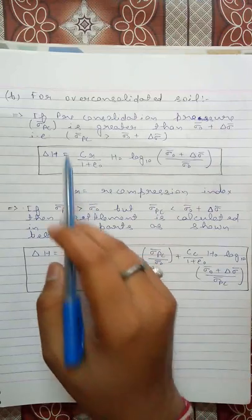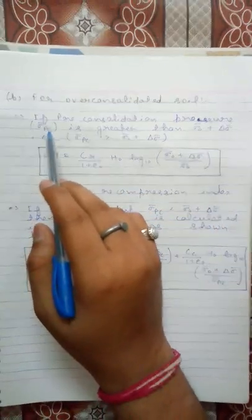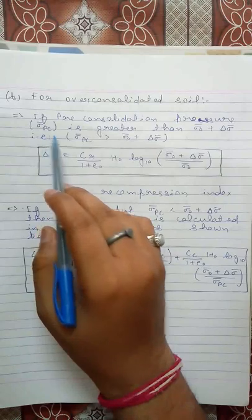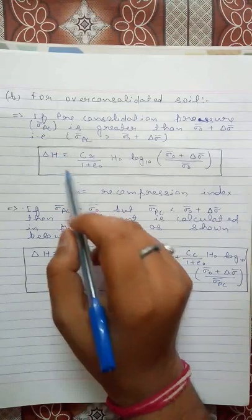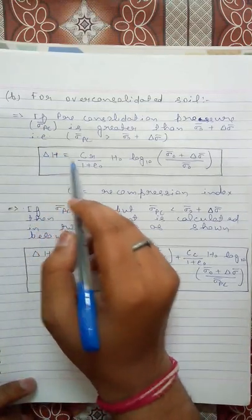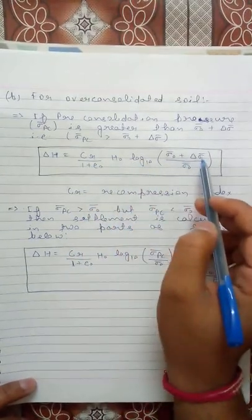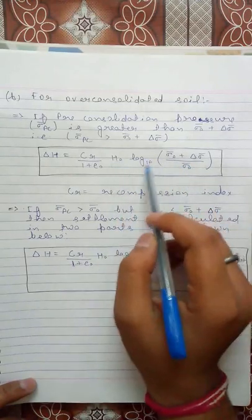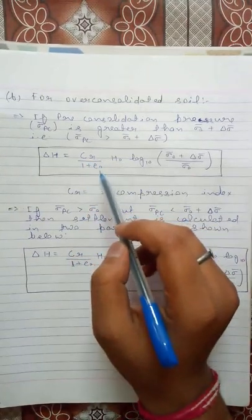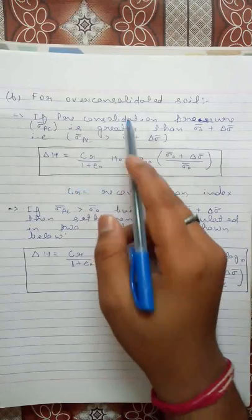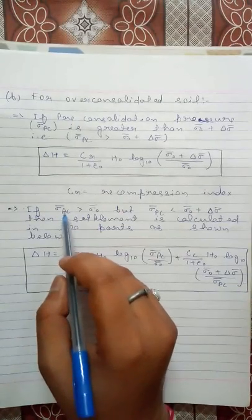For over-consolidated soils there are two cases. Case 1: if the pre-consolidation pressure σpc is greater than σ₀ + Δσ, then settlement is calculated as: δH = Cr/(1+e₀) · H₀ · log₁₀((σ₀ + Δσ)/σ₀), where Cr is the recompression index used instead of the compression index Cc.